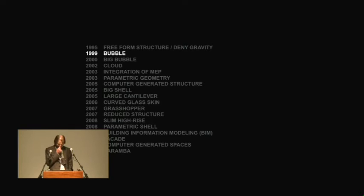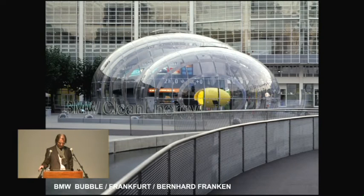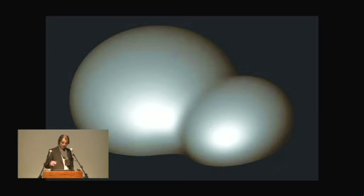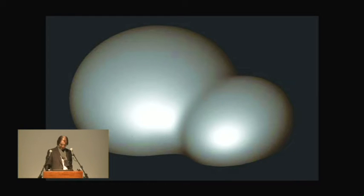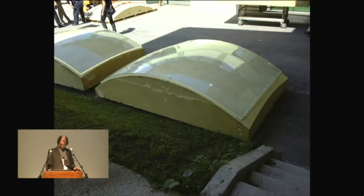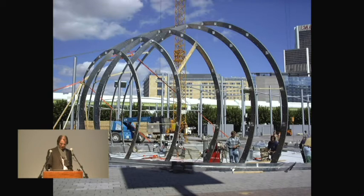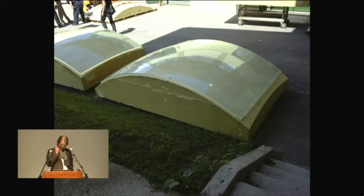We did a lot of work in free-form when it started to come up. With Bernhard Franken, we did what I think was the first bubble which was really built — a building for BMW, a fair building in Frankfurt. Bernhard was the first one in Europe to use Maya. These are two water drops flowing into each other; he stopped the process and said this is the model — and this we have to build. We did it by creating an aluminium skeleton and by bending acrylic glass on milled molds.